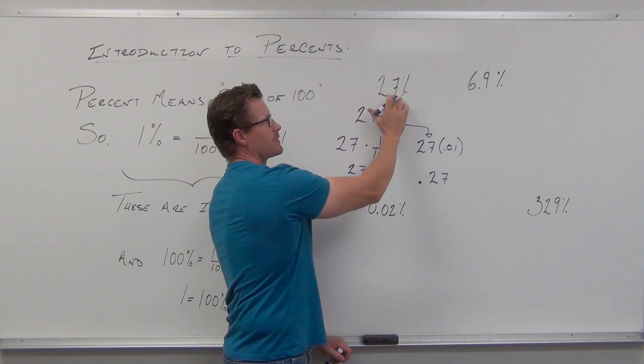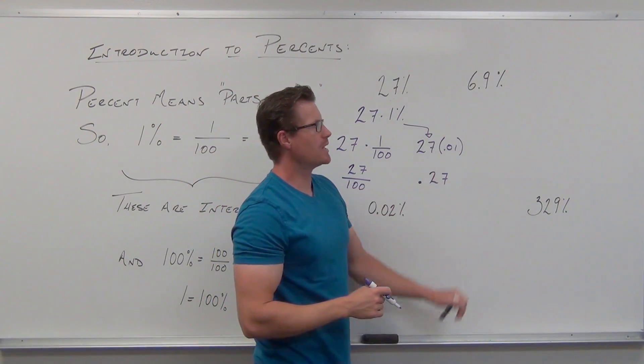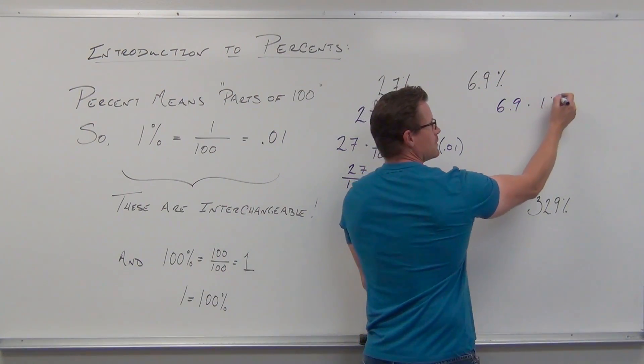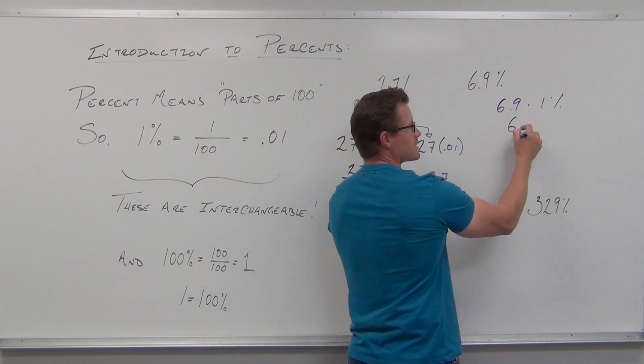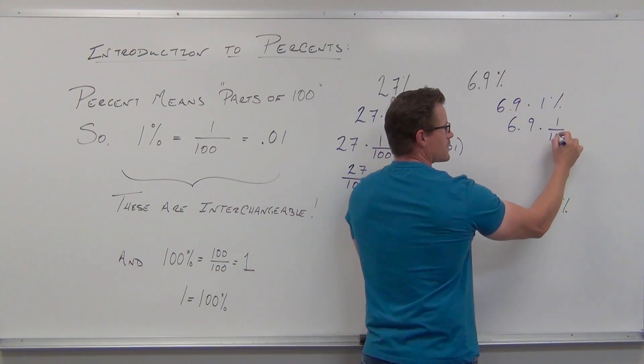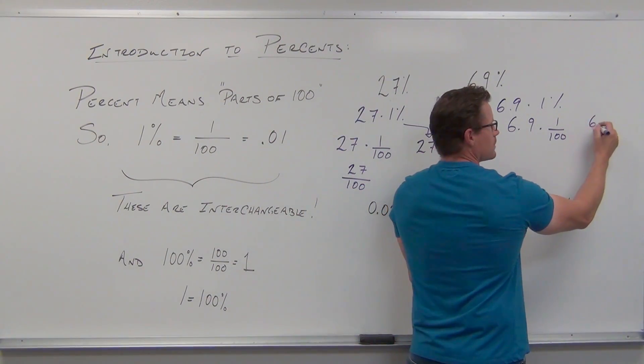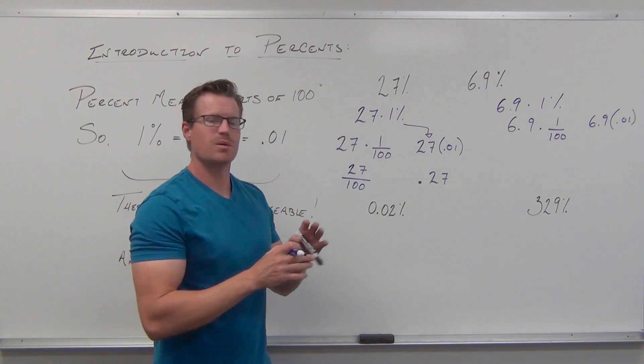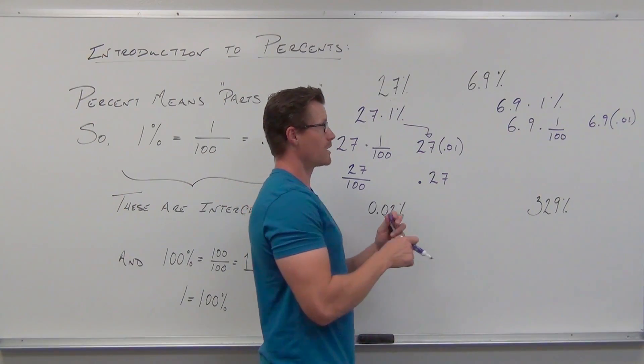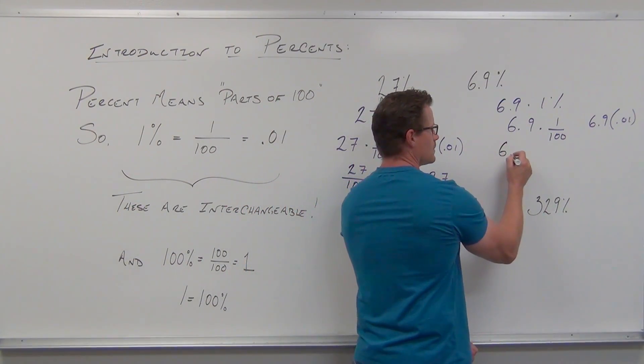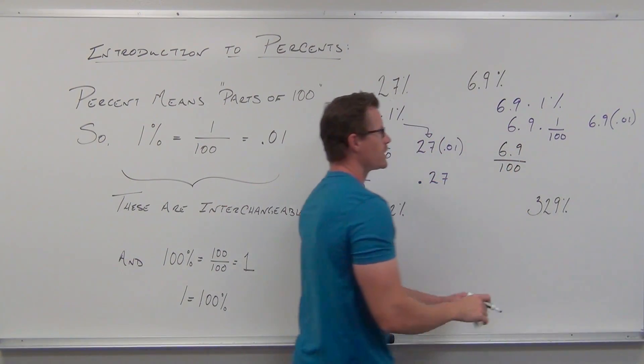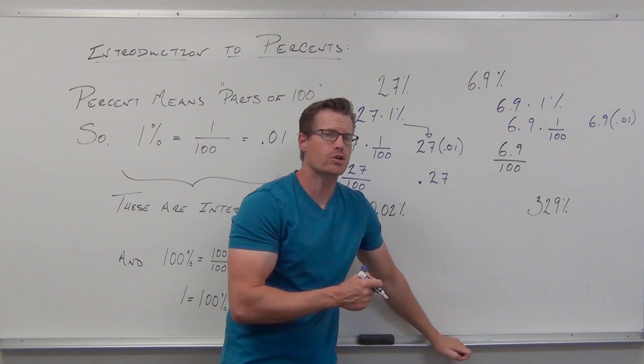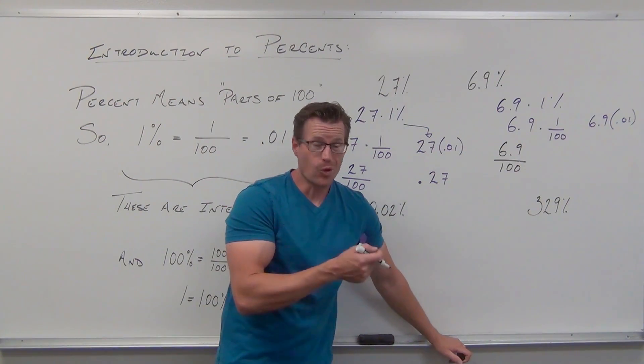So I'm going to show you a couple more times. If you want to change 6.9% into a fraction, sure, we can go ahead and do 6.9 times 1%. That's 6.9 times 1/100 for your fraction, or 6.9 times .01 for your decimal. Now, a lot of people are never going to show that work. A lot of people are just going to go, well, if I have 6.9%, that means 6.9, 6.9 times 1, 6.9. Over 1, 1 times 100 is 100. 6.9 parts out of 100, that's what that means.